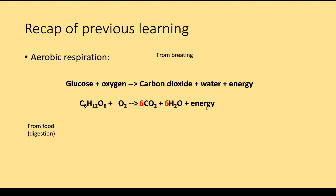Remember there's no symbol for energy. It doesn't matter which order you've done the reactants and products in, as long as they're on the right side. This is what the balanced symbol equation should look like — we should have a 6 before the O2, a 6 before the CO2, and a 6 before the H2O. And finally, glucose comes from the process of digestion, and oxygen comes from breathing. Hopefully you now have a definition of those two words — we're going to look at that in just a moment.